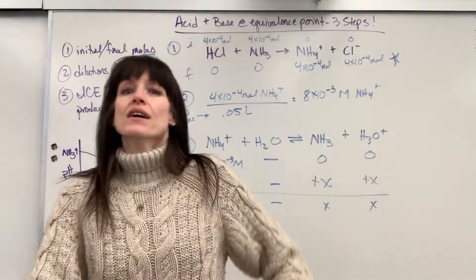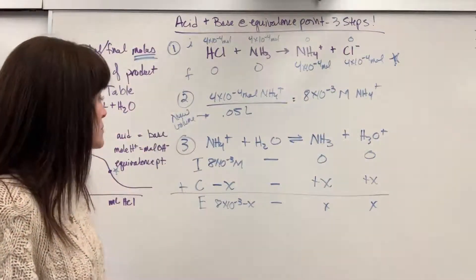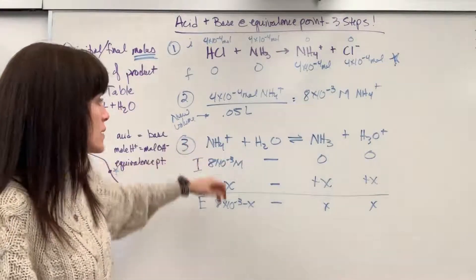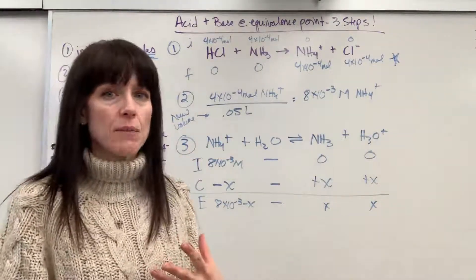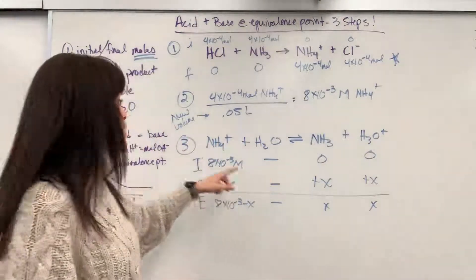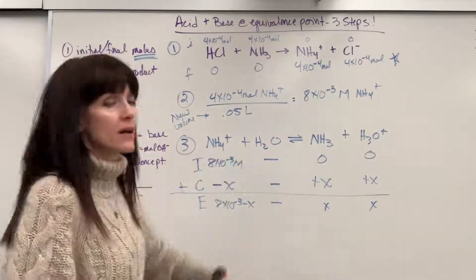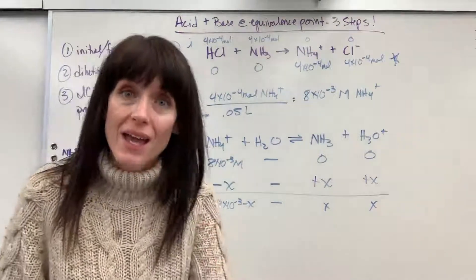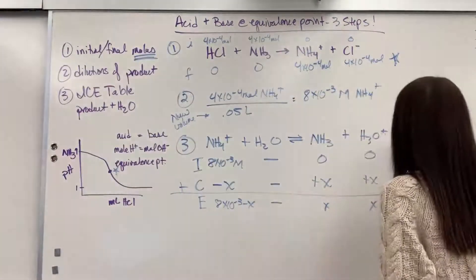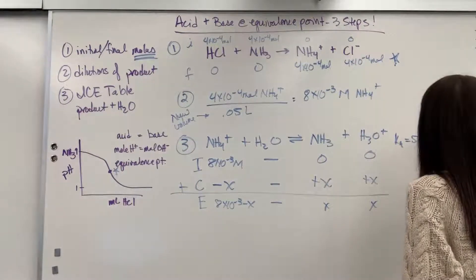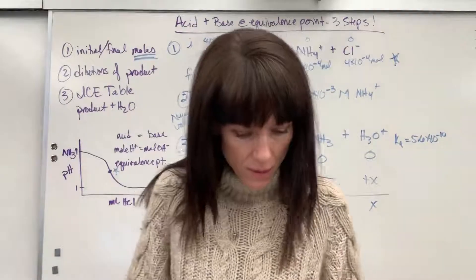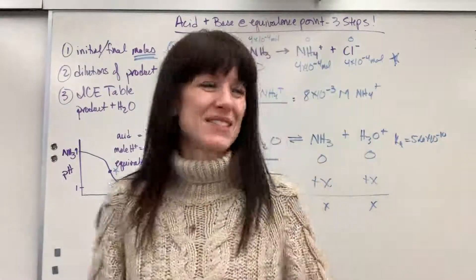Now we have to solve for X, which means I've got to look up the Ka for this equation. Why Ka and not Kb? Whatever is added to water determines the reaction — this is an acid plus water, therefore I look up the Ka of ammonium. The Ka for ammonium is 5.6×10⁻¹⁰.